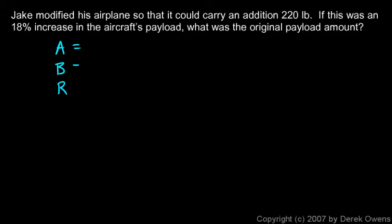The amount, the base, and the rate. In this case, the amount is the additional 220 pounds. The base is what we don't know—we don't know the original total, but we do know the rate. We're told it was an 18 percent increase. So I'll say A over B equals R over 100, and I'll put those numbers in.